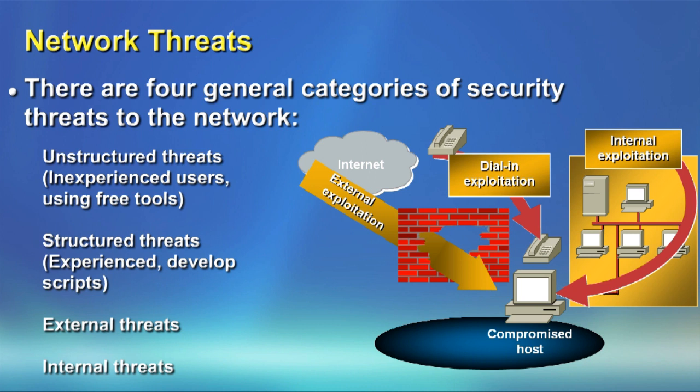External threats come from outside the network, whereas internal threats come from within. A common measurement is the 80-20 rule: 80% of network attacks come from within the network and 20% from outside. So today it is more important to secure the network from the inside.